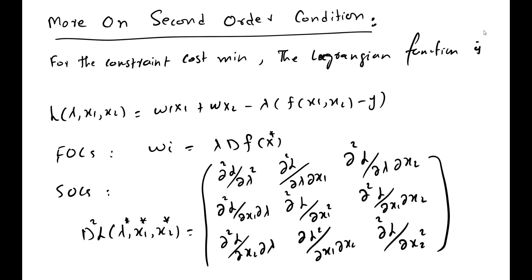And the cost will not be minimized — in other words, the profit will not be maximized. In this lecture we are going to discuss the importance of the second order condition in the decision of maximization or minimization of an economic function. The second order condition helps us decide whether the function would be maximized or minimized.